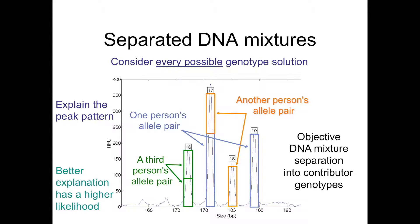Adding up all these different quantities of the allele pairs produces a pattern. When the heights of those summed rectangles are close to the heights of the observed peak data, that explanation — those genotypes — has a higher likelihood. When patterns are proposed that move those rectangles where there is a very low peak height, that doesn't explain the data as well, conferring lower probability to the component genotypes. By having the computer try this 10,000 or 100,000 times, moving these rectangles, their heights, and the allele pairs, the computer can objectively separate a DNA mixture into, in this case, three contributor genotypes.